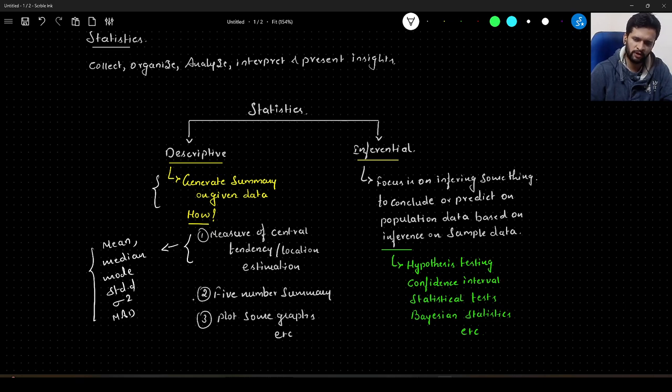Apart from this, we also make use of something called the 5-number summary, and we also make use of some graphs so that we can describe the data in an efficient way. Descriptive statistics mainly deals with describing the given data.